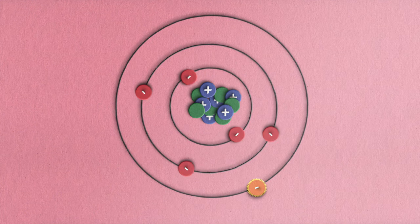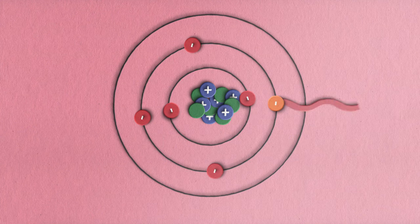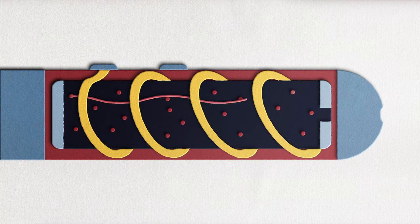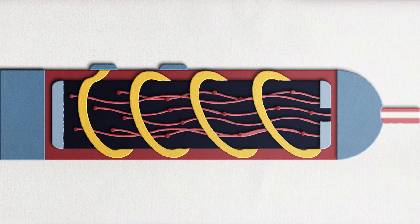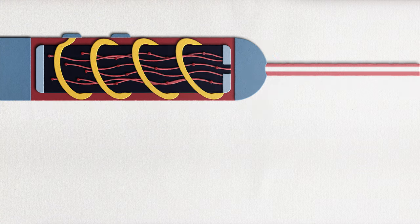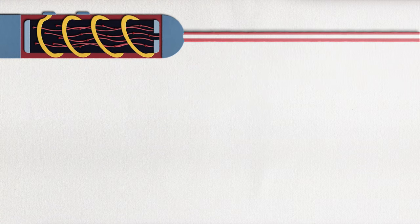When the electron returns to its ground state, the lowest energy state, it releases a photon. When one electron spontaneously emits a photon, it stimulates the electrons around it to do the same thing. The photons released by the excited electrons will all be the same wavelength of light, unlike regular light, which is composed of many different wavelengths.